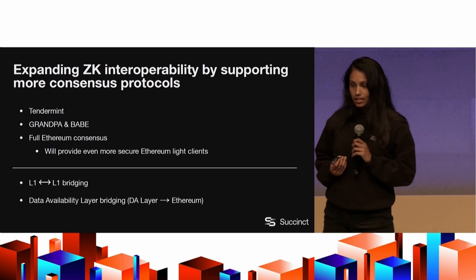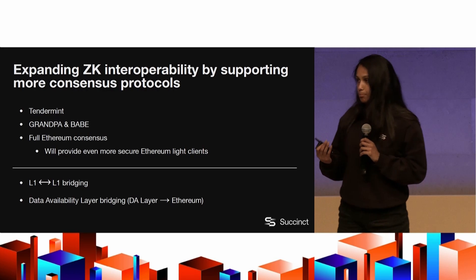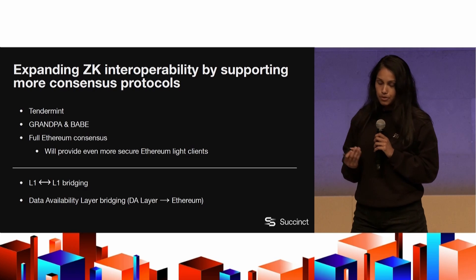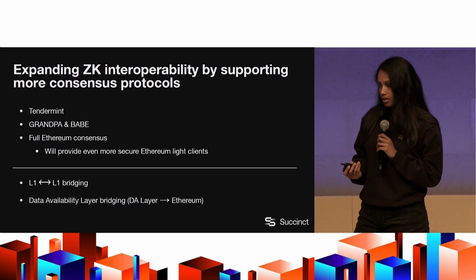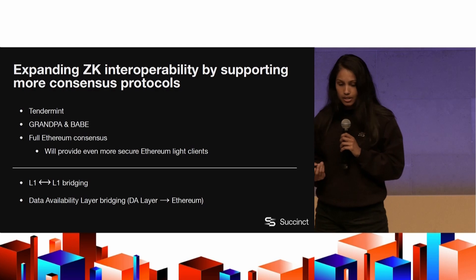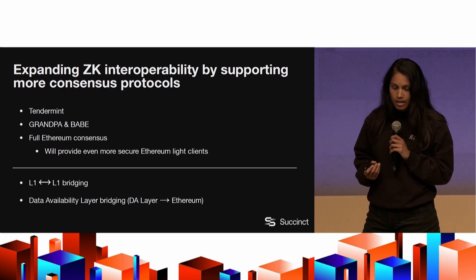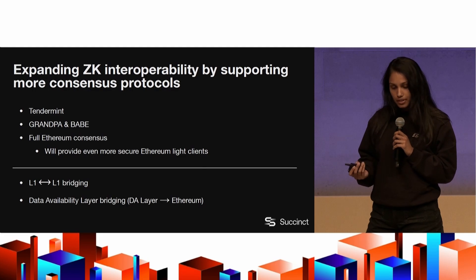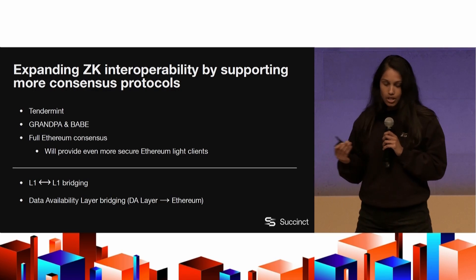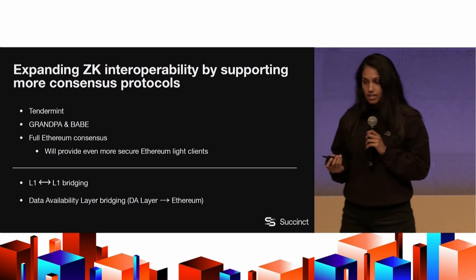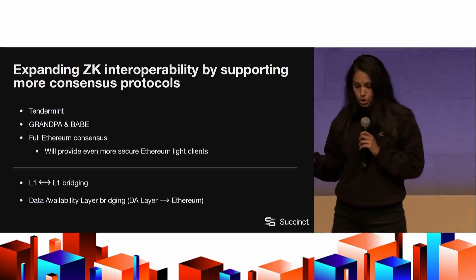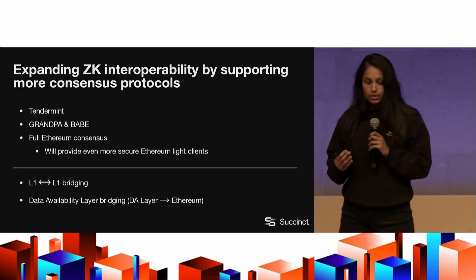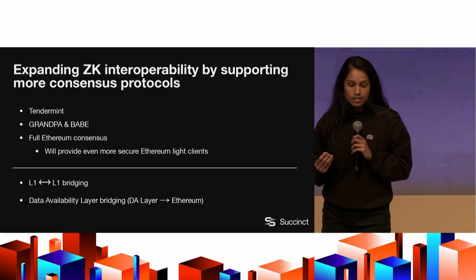We've built this Ethereum ZK light client, but we want to expand ZK interoperability by supporting more consensus protocols. There are really only a few that matter: Tendermint, commonly used across the Cosmos SDK ecosystem; and Grandpa and Babe consensus, used by the Substrate SDK in the Polkadot ecosystem. These ZK light clients are useful for two things: L1-to-L1 bridging — for example, having an Ethereum chain talk to a Cosmos chain using Tendermint — and data availability layer bridging, where you bridge the state of a DA layer to Ethereum.